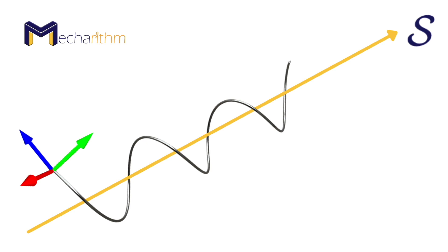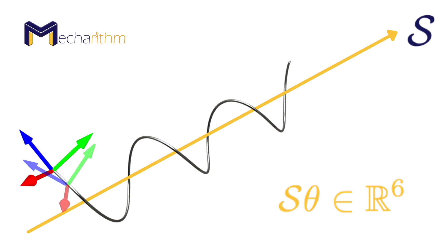Another possible representation of displacement is a six-parameter representation called exponential coordinates, which will be the topic of this session. The six-dimensional exponential coordinates of a homogeneous transformation T can be defined as this equation, where S is the screw axis and theta is the distance that must be traveled along the screw axis to take the frame from the initial configuration i to the configuration T.